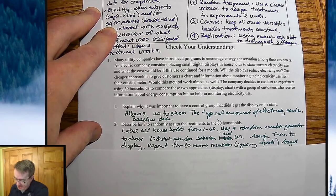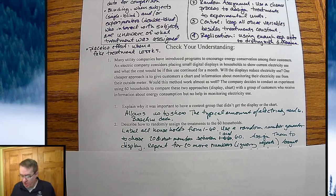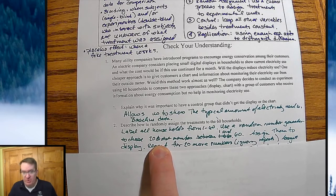So label how to randomly assign these treatments. The way that you would go about this is you're going to label all the households from 1 to 60. You're going to use a random number generator, however you want to do that, to choose 20 distinct numbers between 1 and 60.